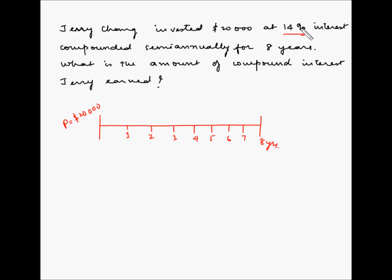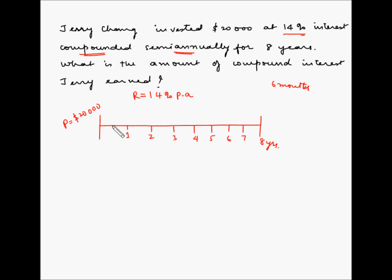The rate has not been specified as per annum or per month, so we'll assume 14% per annum. This interest is compounded semi-annually, meaning every half year — every six months. So at the six-month mark (0.5 years), the interest will be added to the principal.